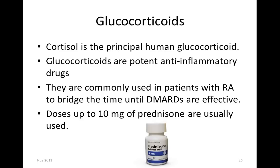Glucocorticoids can be used as well to help with inflammation. Cortisol is the principal human glucocorticoid. Glucocorticoids are known as potent anti-inflammatory drugs — more potent than the NSAID class. They are commonly used in patients with rheumatoid arthritis to bridge the time until the DMARDs are effective. You can start DMARDs together with glucocorticoids while the glucocorticoid is working, since DMARDs usually take about three weeks to take effect. Usually a low dose of prednisone — about 10 milligrams — is used, and patients need to be slowly tapered off steroids to prevent rebound inflammation.